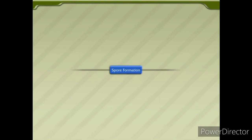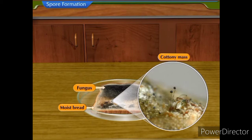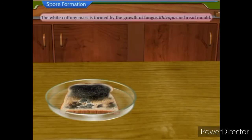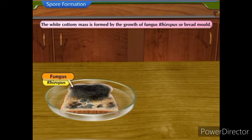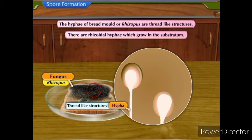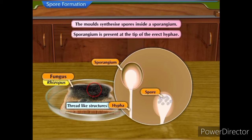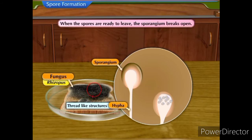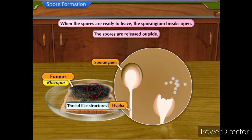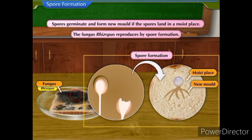Spore Formation: In a previous activity, we observed that fungus grows on a piece of moist bread and forms a cottony mass — this is formed by the growth of fungus Rhizopus or bread mold. The hyphae of Rhizopus are thread-like structures; there are rhizoidal hyphae which grow in the substratum. The mold synthesizes spores inside a sporangium, which is present at the tip of the erect hyphae. When spores are ready to leave, the sporangium breaks open and spores are released. If the spores land in a moist place, they germinate and form new mold. This method is known as spore formation, and the fungus Rhizopus reproduces by spore formation.